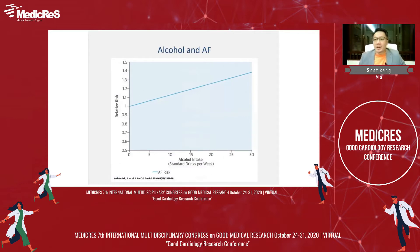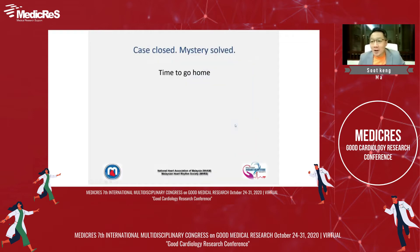Now, off the bat, let me tell my audience: if you want to know the answer whether alcohol is associated with developing AFib or not, I'll give you this graph. It's very clear that there is a linear relationship between alcohol intake and development of AFib. Case closed. There is a relationship. Mystery solved. Then we all can go home, right? But of course, there is more to this.